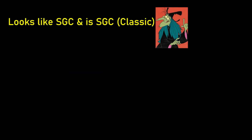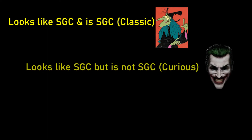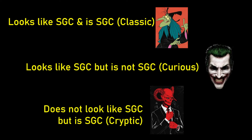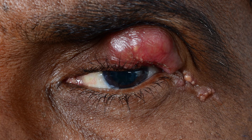There are three scenarios that often occur while looking at an eyelid lesion. The first is the classic: it looks like an SGC and is an SGC. The second makes you curious: it looks like an SGC but is not an SGC. The third is the cryptic and most vicious: it does not look like an SGC but is an SGC.